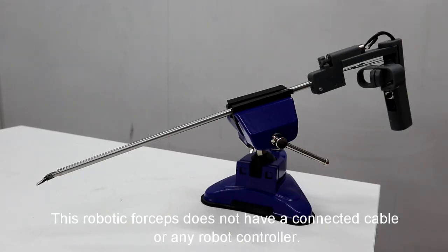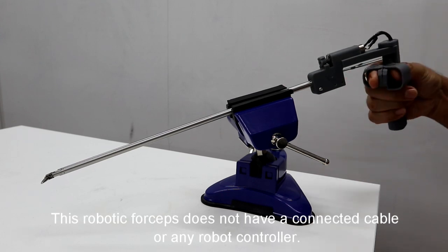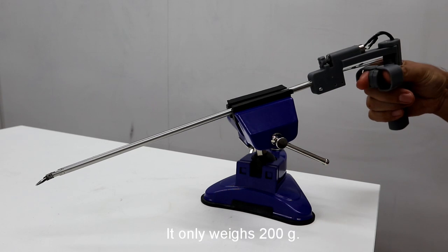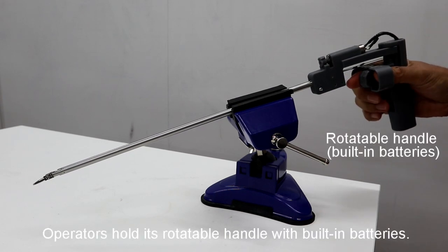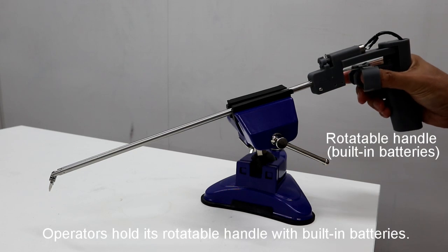This robotic forceps does not have a connected cable or any robot controller. It only weighs 200g. Operators hold its rotatable handle with built-in batteries.